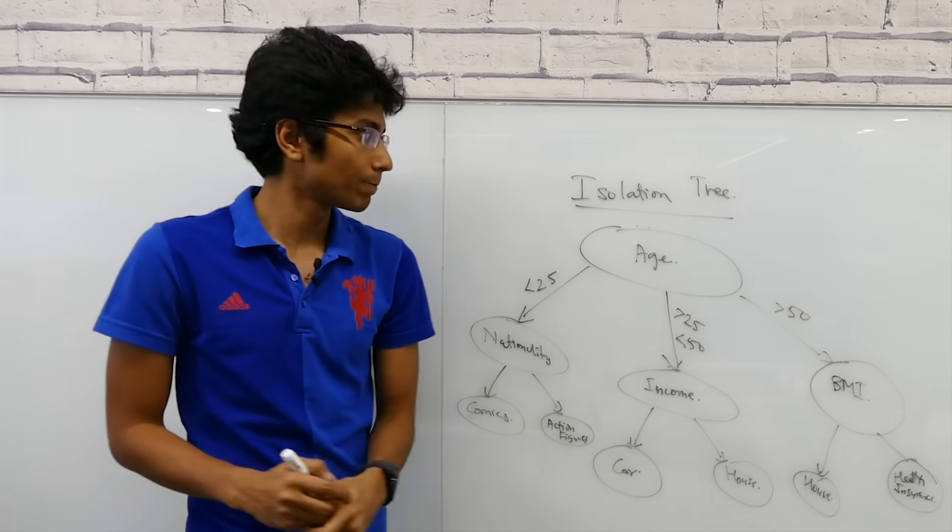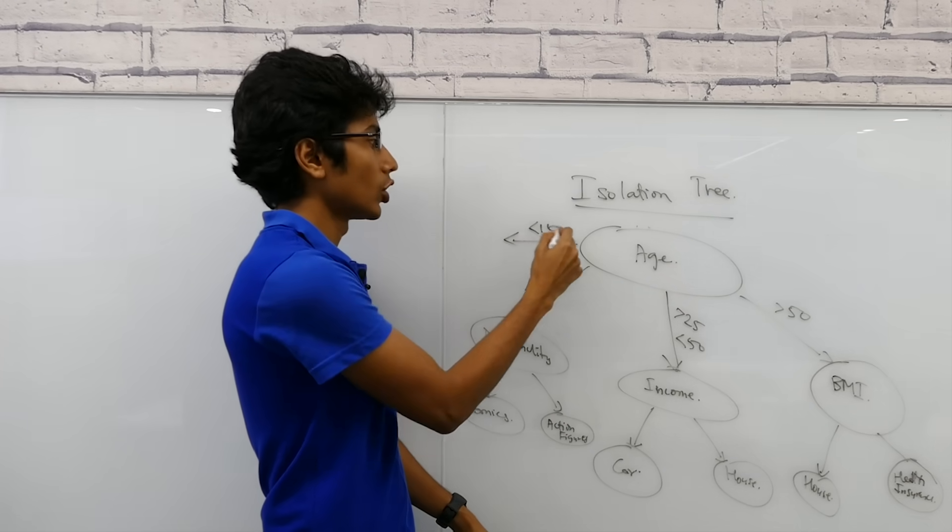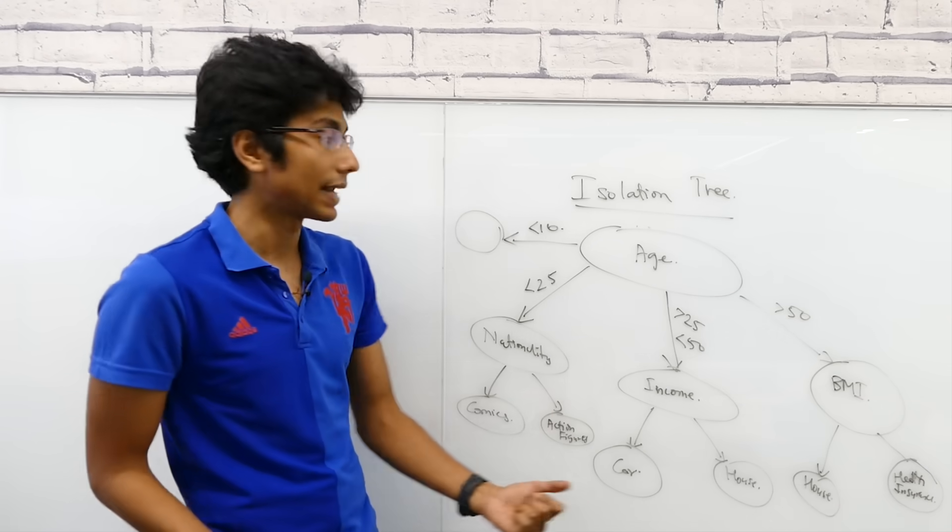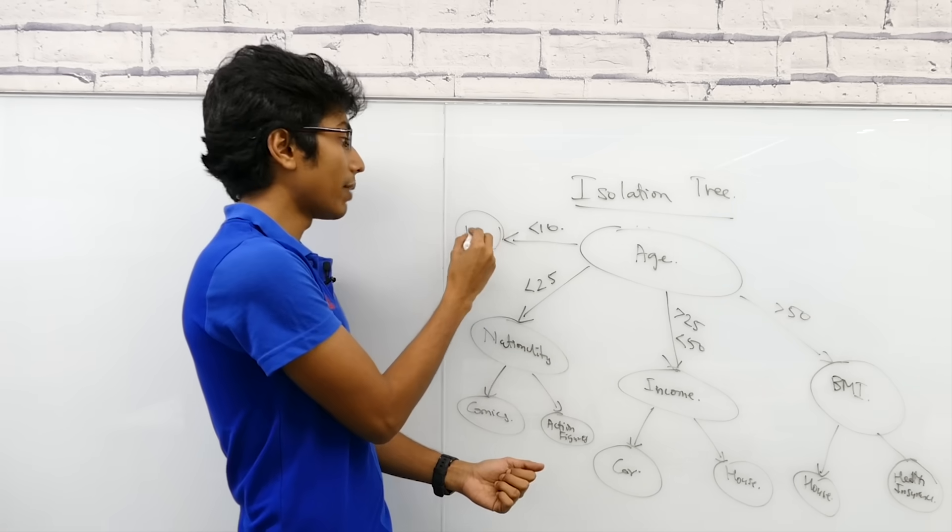That's what an anomaly is. For example, if your age is less than 10, you probably buy nothing at any given point in time, or maybe all the time action figures or something like that. What if age less than 10, you end up buying a house?